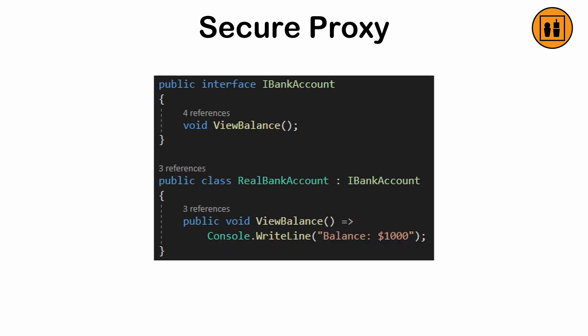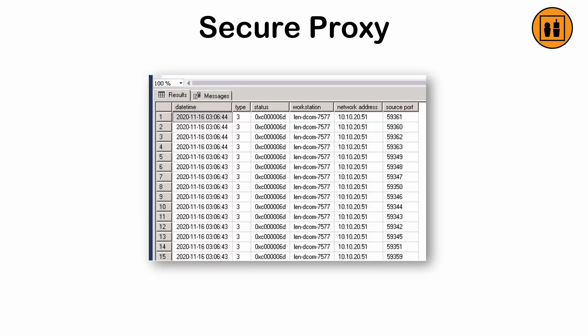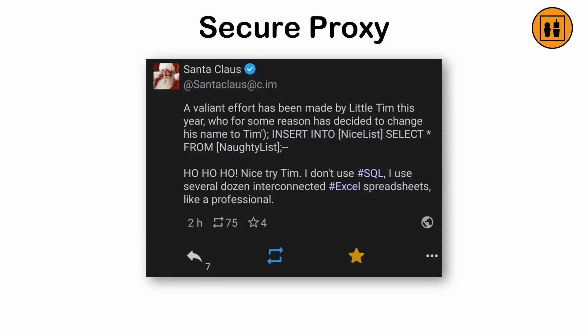For example, a bank client cannot directly modify account details. Instead, they interact with a teller or online interface, which enforces the bank's policies and validates actions. Secure proxies can log actions, enforce access controls, or sanitize requests.